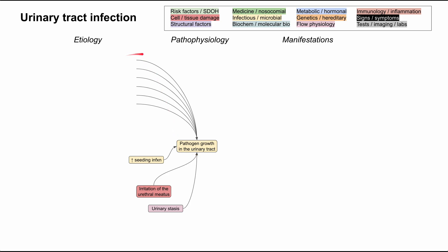Bacteria are overwhelmingly the most common types of pathogens that cause UTIs. Number one on the list is E. coli. They make up about 80% of the bacteria that cause UTIs, and it's really the go-to if you just have to suspect somebody has a UTI — it's usually because of E. coli.